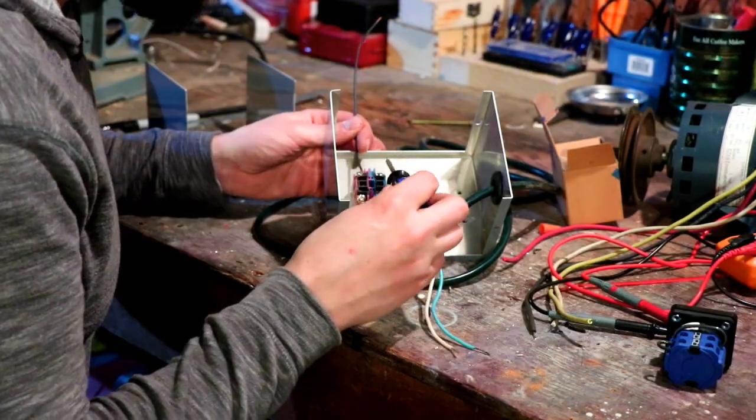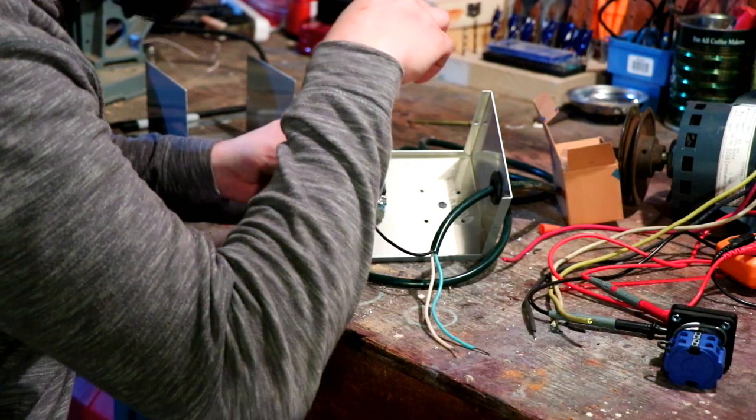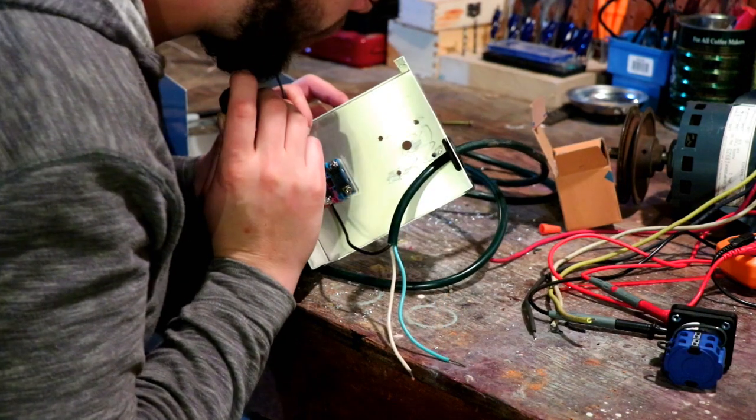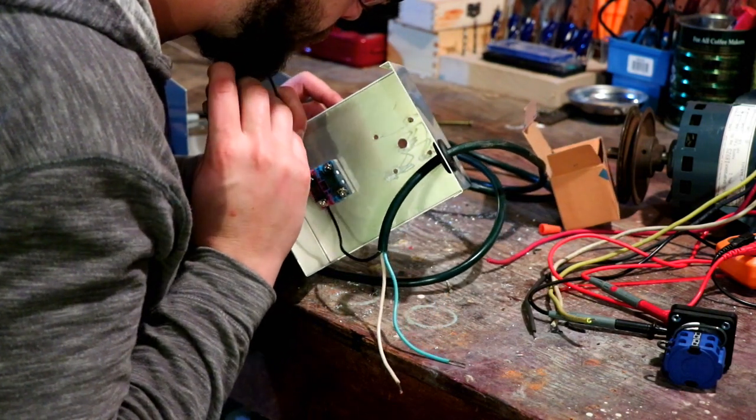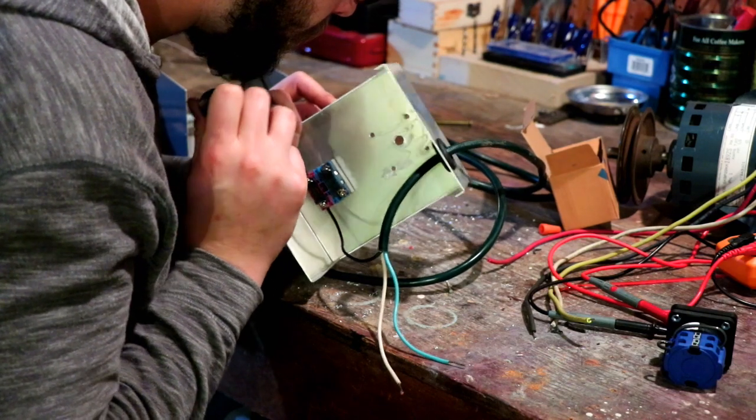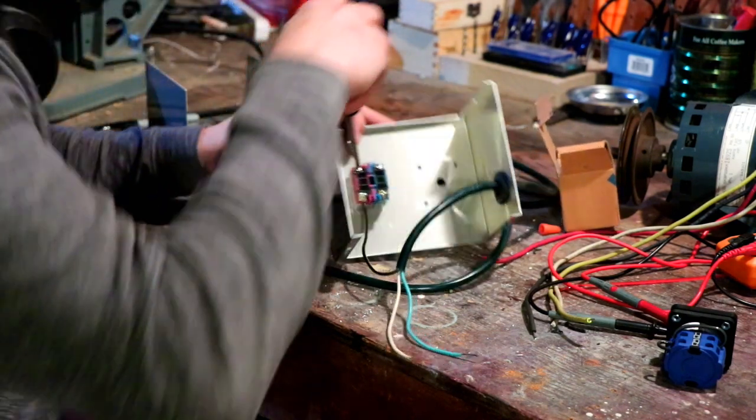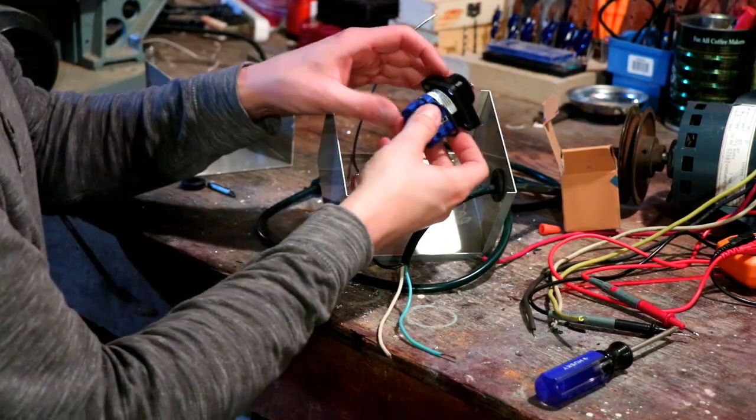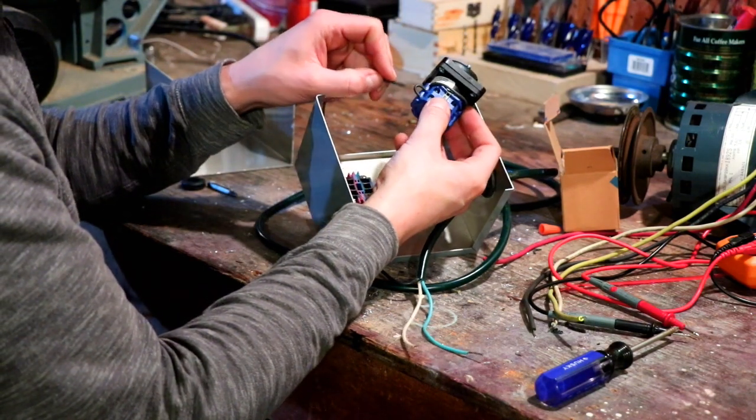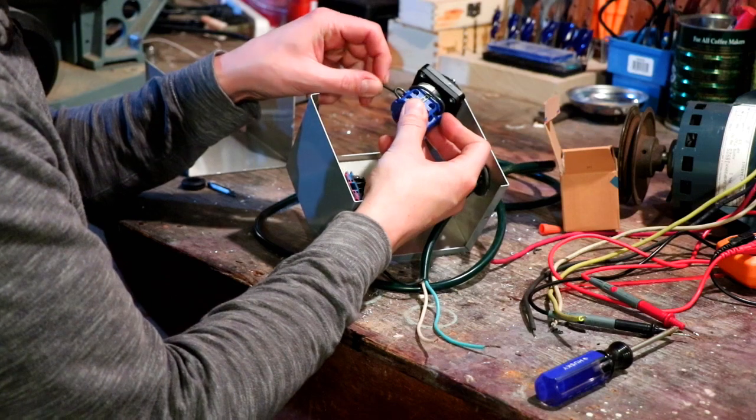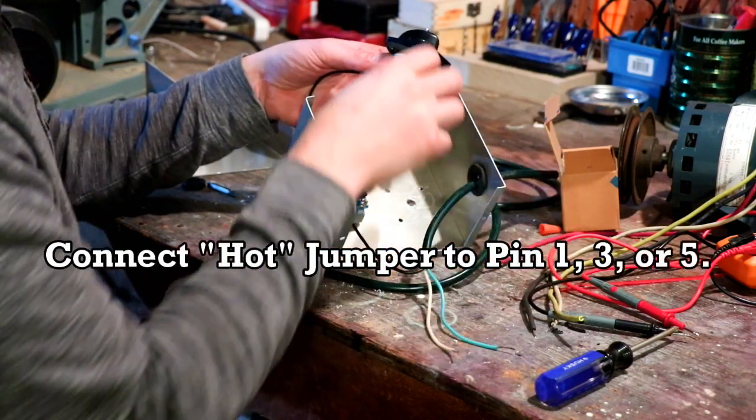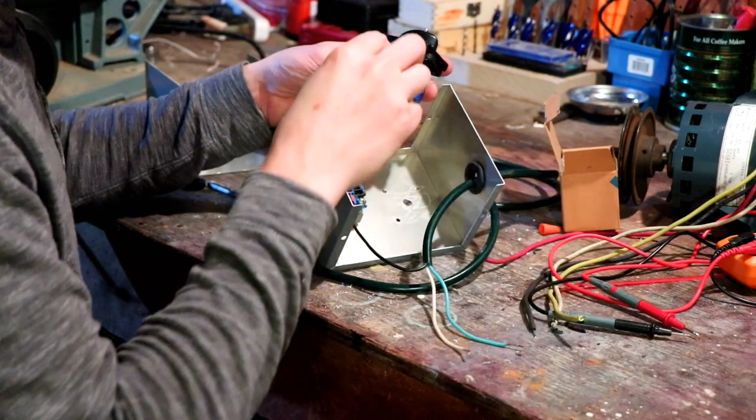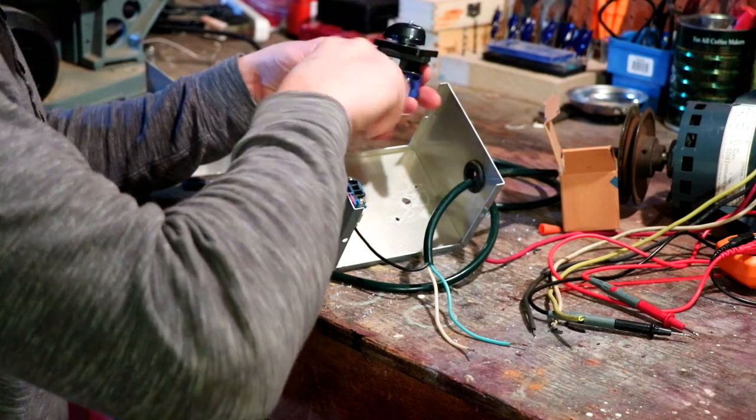And I'll connect a jumper wire to the other side of my normally closed side. Now I'm going to run the other side of my jumper to the terminal that I left loose here. And then I can go ahead and tighten that down. Which is actually number five in my case.